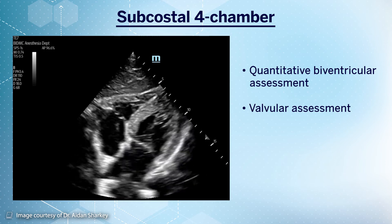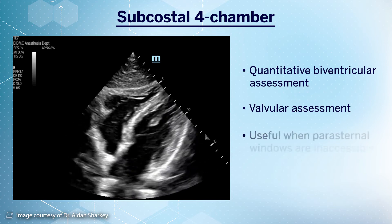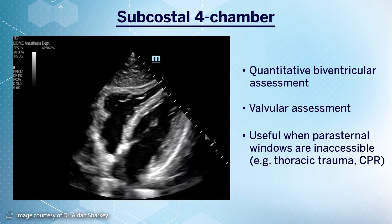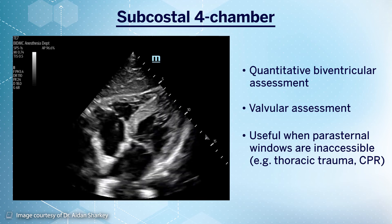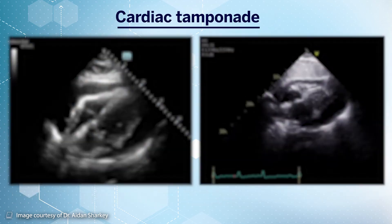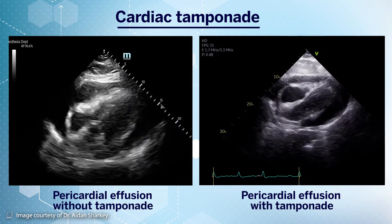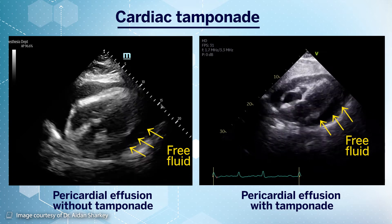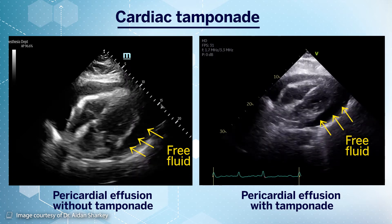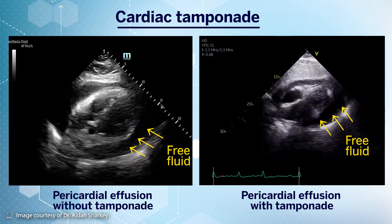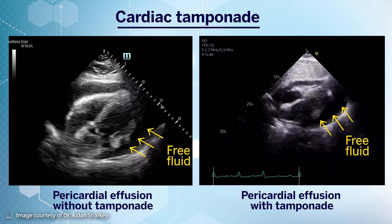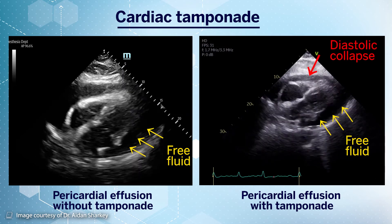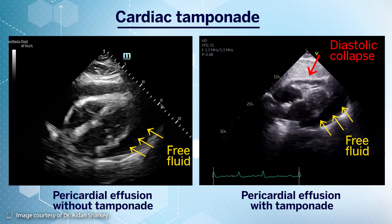It can also be useful in thoracic trauma where parasternal windows may not be accessible, or if there are ongoing resuscitation efforts limiting front-of-chest access. This view is also particularly good for evaluating free fluid in the pericardial space, as shown in these videos where we see free fluid depicted by the yellow arrows. In both video clips we can see a circumferential fluid collection, and one distinguishing feature suggesting possible tamponade physiology is right ventricular diastolic collapse, as seen on the video to the right of the screen.